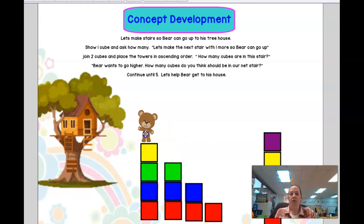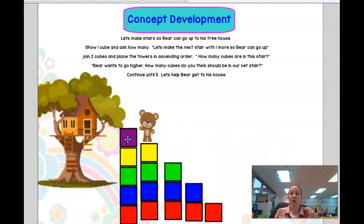We're going to add one more cube. Now, we have a yellow cube. Let's see if that will get him to his treehouse. Not quite there yet. We need to add one more cube.